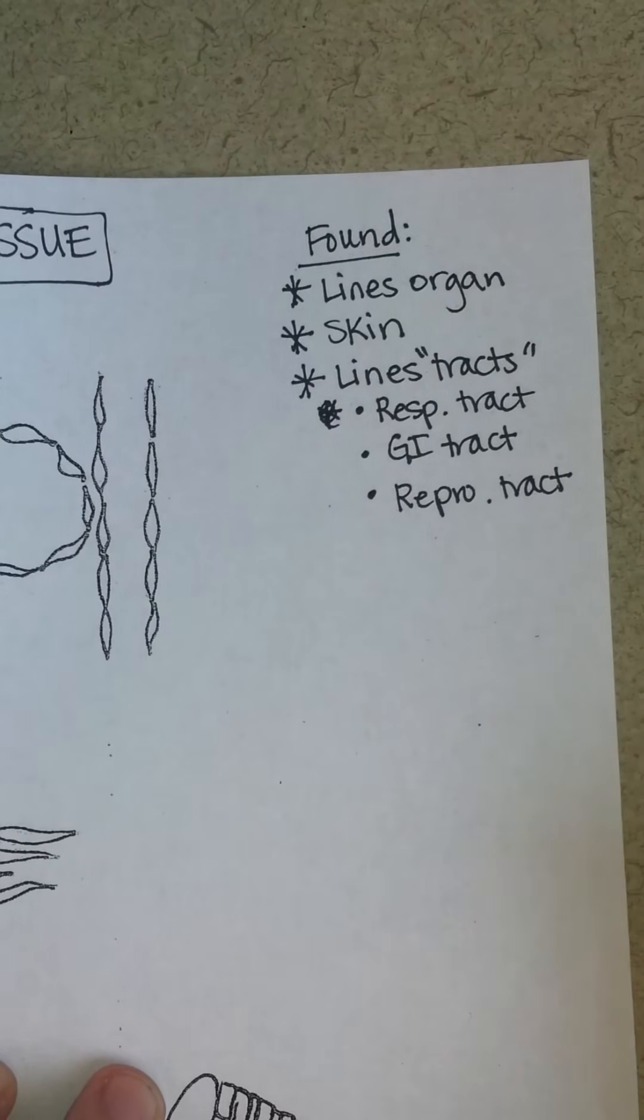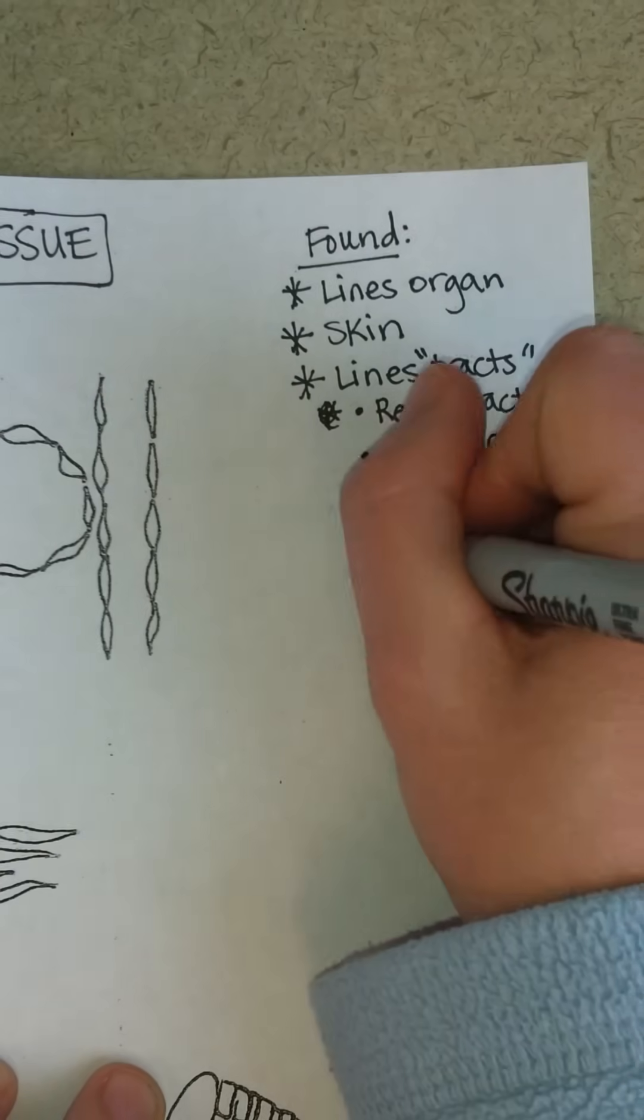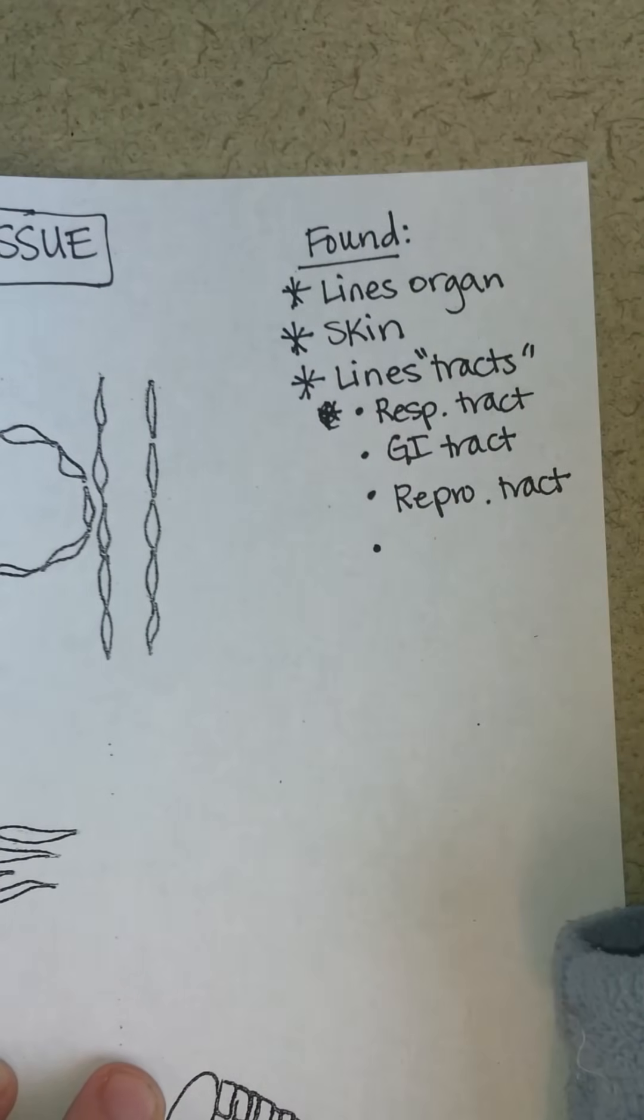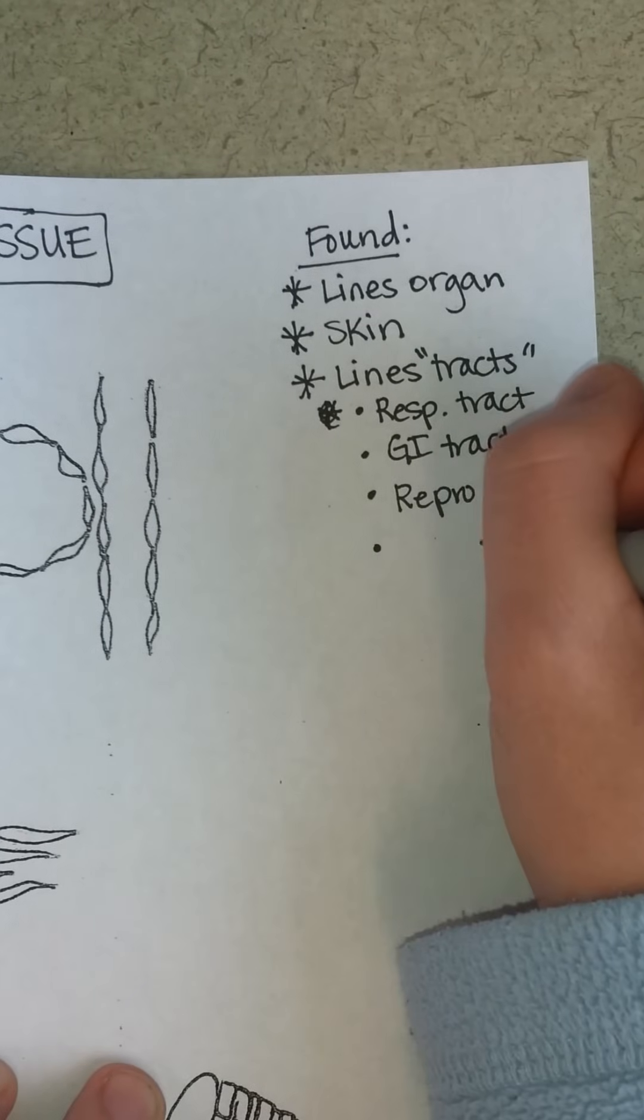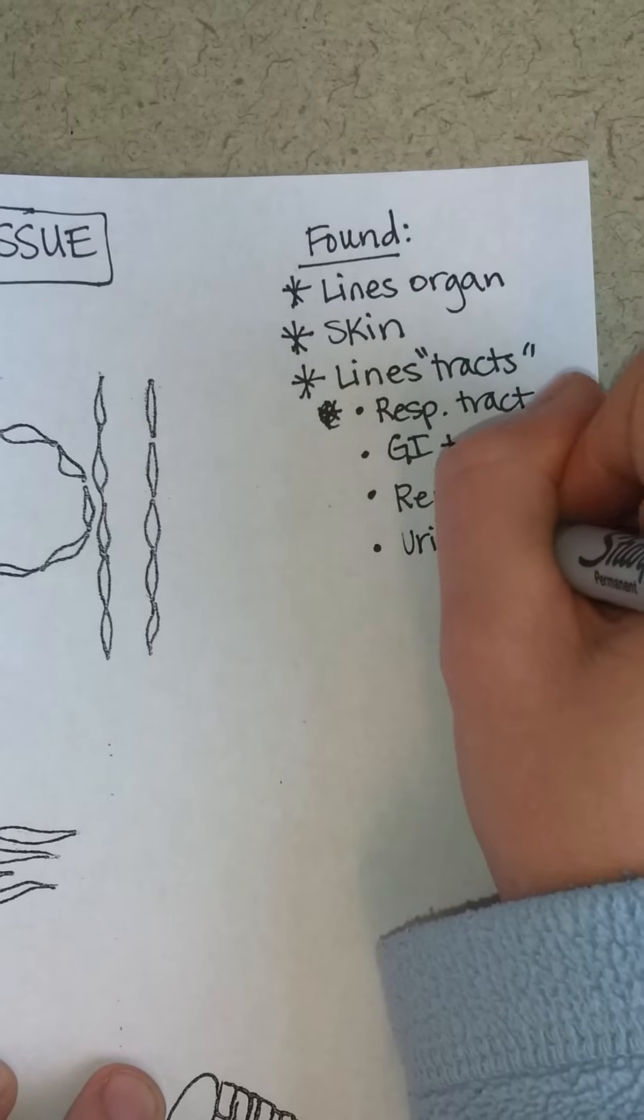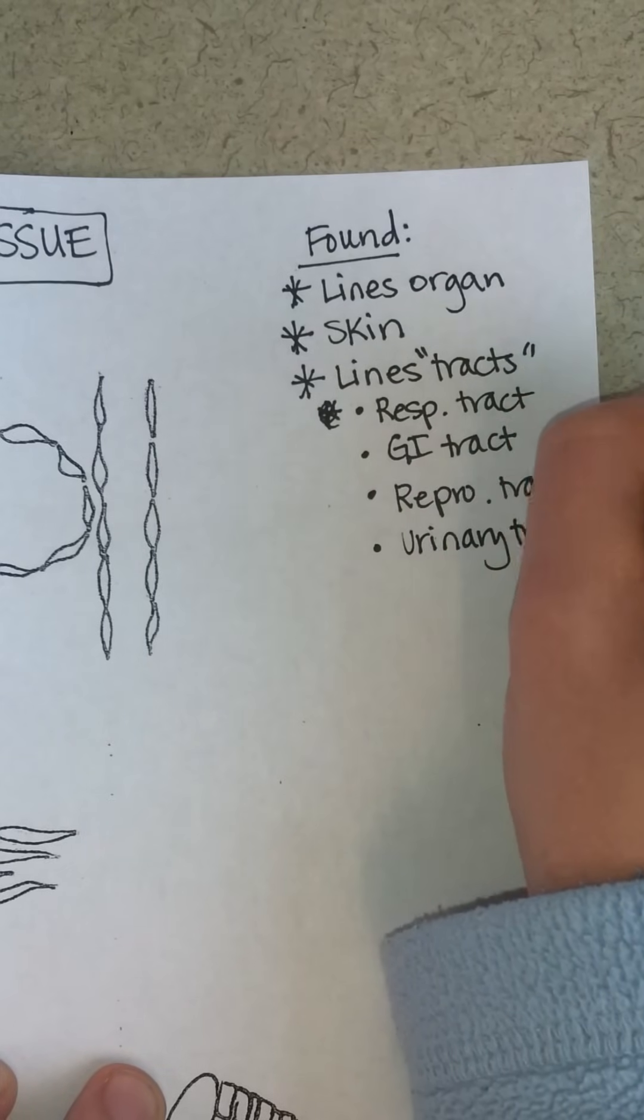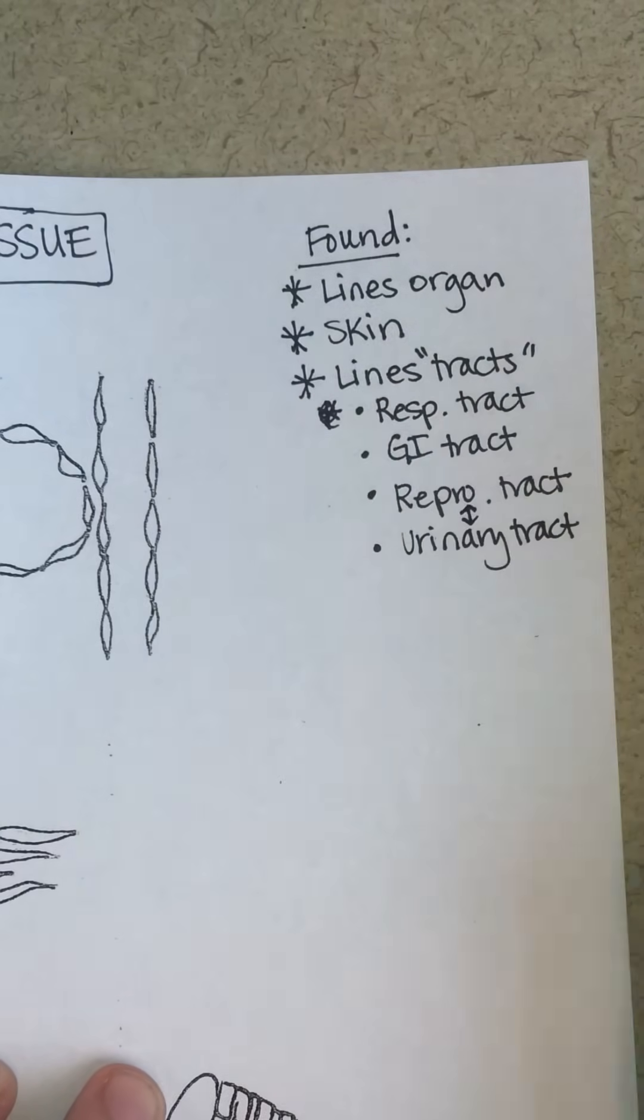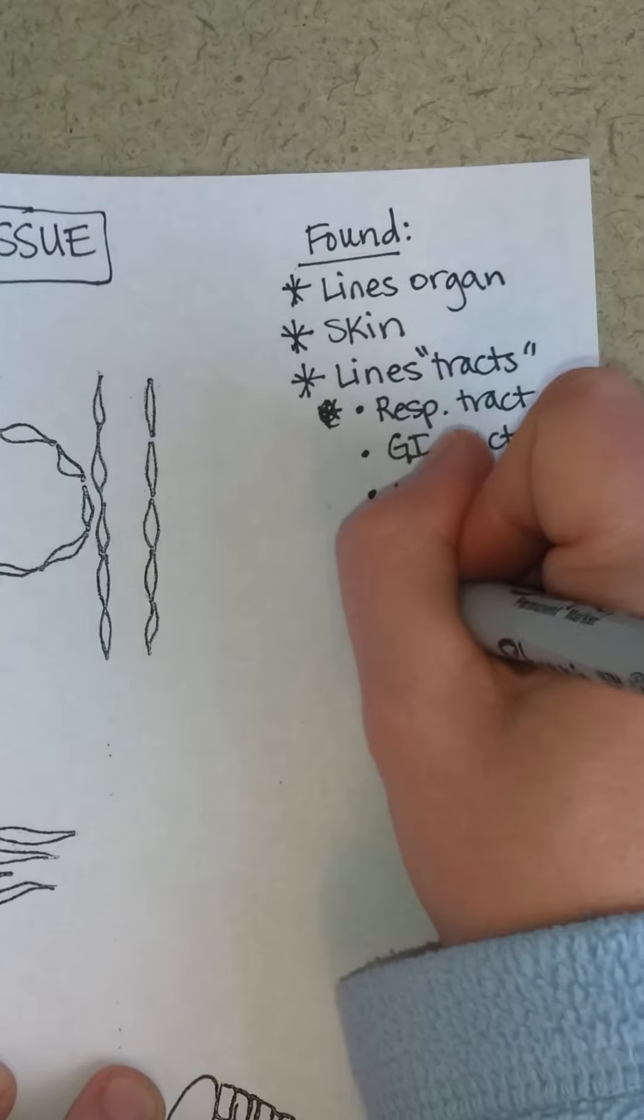In males, semen and urine go out the same opening through the penis. In girls, urine leaves via the urethra, and the reproductive tract is the vagina. But both of those are tracts. And so then the urinary tract. Sometimes these could be combined, as they are in males.